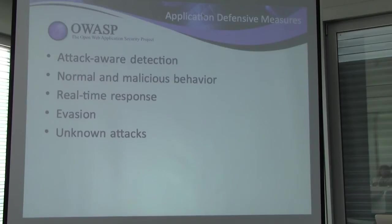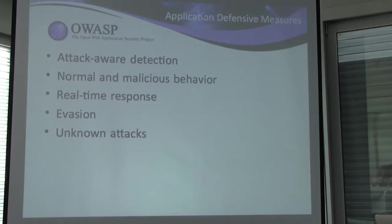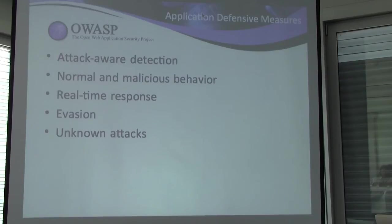This leads to some quite interesting properties. If you instrument your application in the AppSensor way, you can use it to know whether your applications are under attack — generally people are guessing by drawing from network and host devices. The application can tell you definitively that something odd is going on. And because we're only interested in clearly malicious behavior, those detection points generally shouldn't be activating, so you don't have huge amounts of data to collect, store, and analyze.